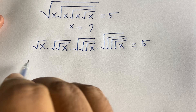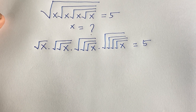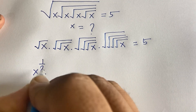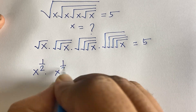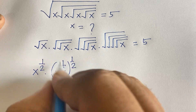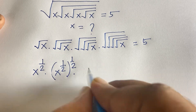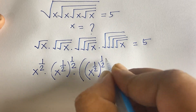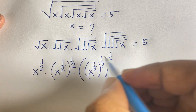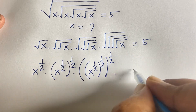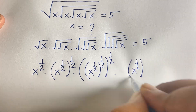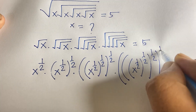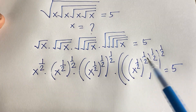Now I convert each square root using exponential rules. Square root of x becomes x to the power of 1/2. The second term is (x^(1/2))^(1/2) = x^(1/4). The third term is x^(1/8), and the fourth term is x^(1/16). So the expression becomes x^(1/2) times x^(1/4) times x^(1/8) times x^(1/16) equals 5.